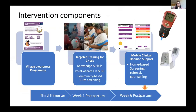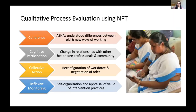The intervention itself was really complex because it had multiple components. It involved training community health workers called ASHAs to learn new skills such as point-of-care testing for haemoglobin and blood pressure. It also involved a technology component where ASHAs were provided with mobile clinical decision support to do these tests at home, screen and refer and counsel women in their homes. This was across three different time points during a woman's antenatal and postnatal care. Using NPT in the process evaluation, I then looked at how this complex intervention was implemented.